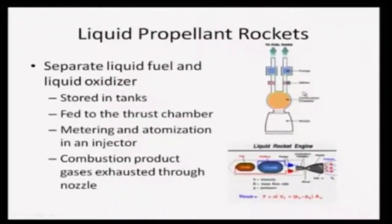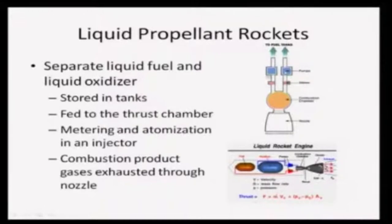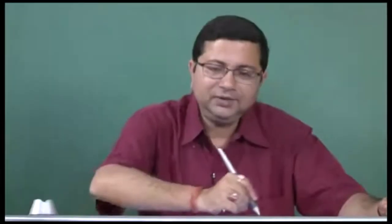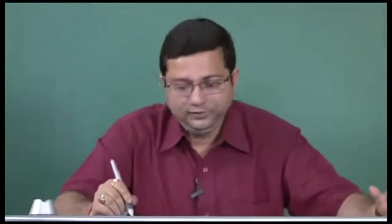Here we have a simple schematic of a liquid propellant rocket, where separate liquid fuel and oxidizers are stored in the fuel tanks. Both fuel and oxidizer are fed into the thrust chamber through pumps. There are valves in between to control the flow rates, and metering and atomization is done in an injector. Then combustion takes place in the combustion chamber and the gases are exhausted through the nozzle. That is the basic principle of operation.